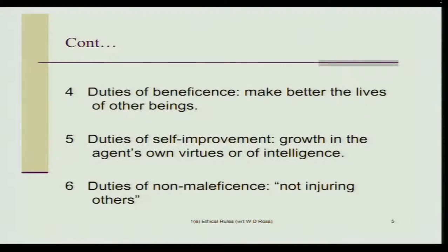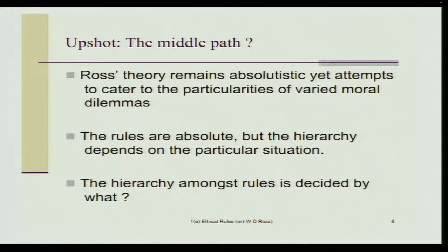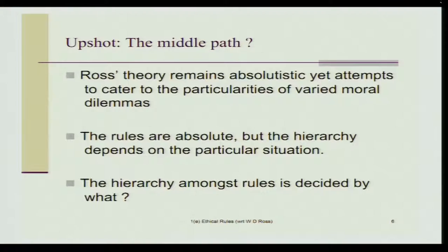As we might see, these are perhaps some of the most fundamental human drives that we have. Duties of beneficence is about making better the lives of other beings — it is our duty to make others' lives better as much as we can. Duties of self-improvement and duties of non-maleficence are fairly self-explanatory. The upshot of Ross's theory is that his theories remain absolutistic, yet attempt to cater to the particularities of varied moral dilemmas. The rules are absolute, but the hierarchy depends on the particular situation.